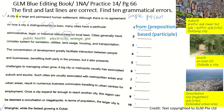Cities generally have a complex system for sanitation — which means public health — utilities, which means electricity, sewage or gas, land usage, housing and transportation. There are many examples of systems listed here, so it should be the plural form. The plural form of 'system' is 'systems', with an S.